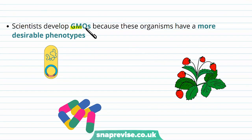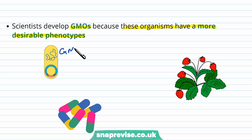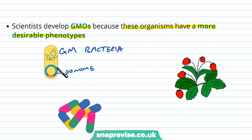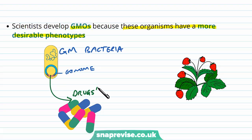Scientists develop GMOs because these organisms tend to have a more desirable phenotype or several phenotypes. For example, we've genetically modified some bacteria by altering their genome so that they have a desirable trait that produces something that we use — for example, they can make certain drugs or hormones that we can use in medicine, whereas the unmodified bacterium wouldn't do this.